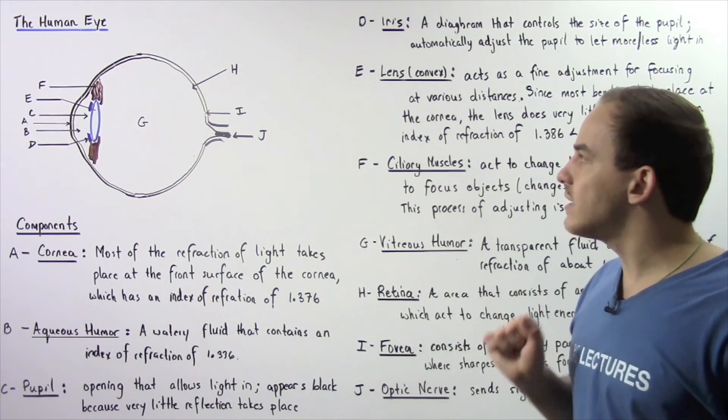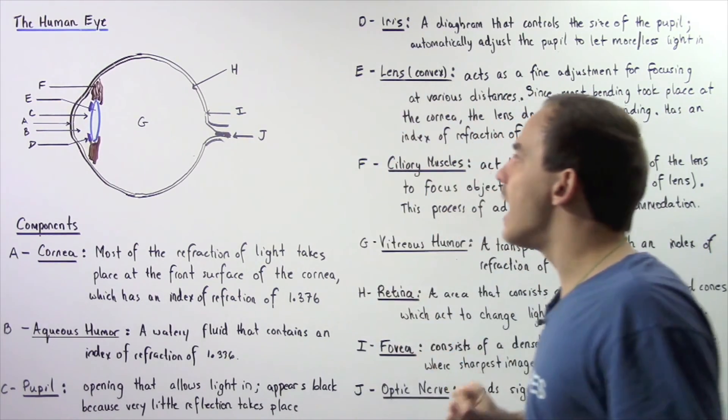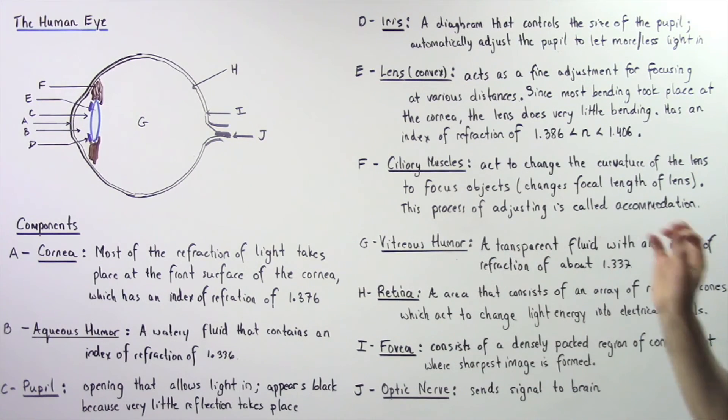The last section that I'd like to mention is given by I. And this is known as the fovea. The fovea consists of a very dense section of cones and it essentially represents the point where the sharpest image is usually formed.